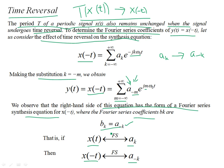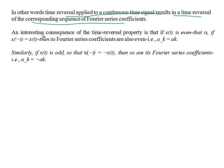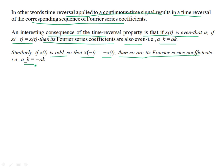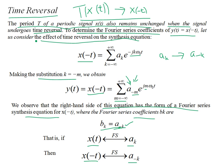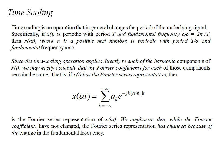An interesting consequence of the time reversal property is that if x(t) is even — meaning x(−t) = x(t) — then its Fourier series coefficients are also even: a_{−k} = a_k. Similarly, if x(t) is odd — meaning x(−t) = −x(t) — then the Fourier series coefficients are also odd. So if the signal is even, the coefficients are even; if the signal is odd, the coefficients are also odd.